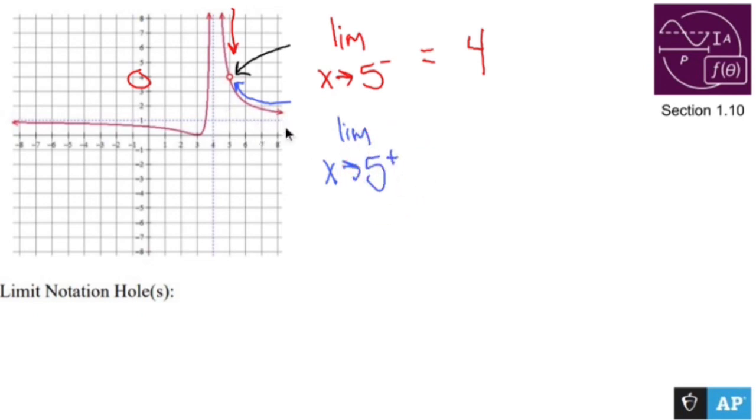As I approach the x value of 5 from the right side, I hit the same exact y value of 4. So the answer is going to be exactly the same from the left and from the right. And that's how you do limit notation of a hole.